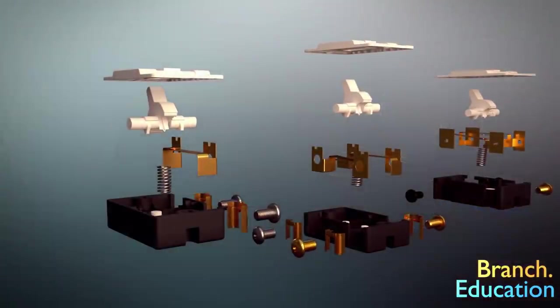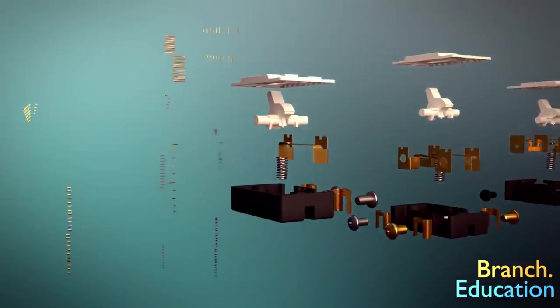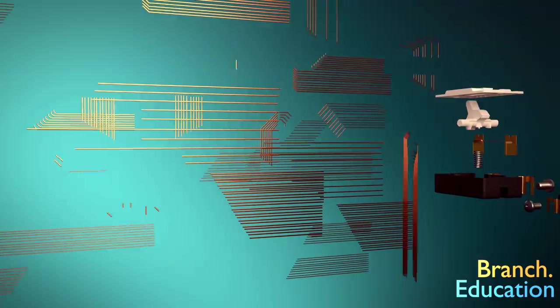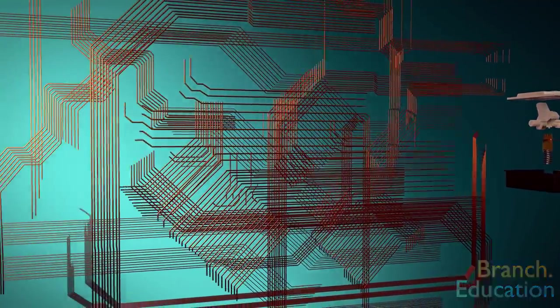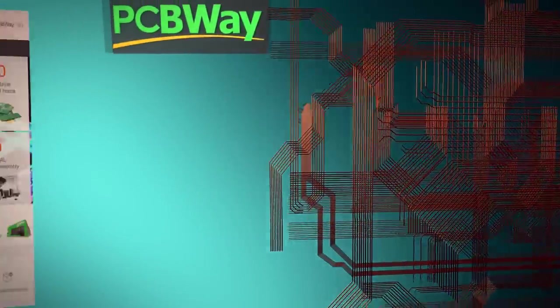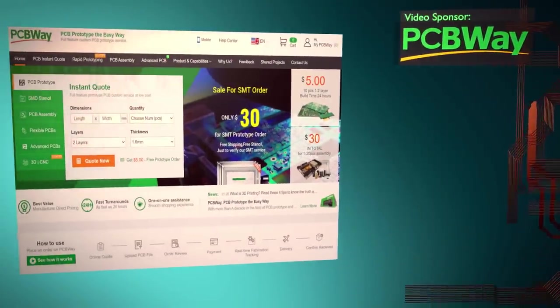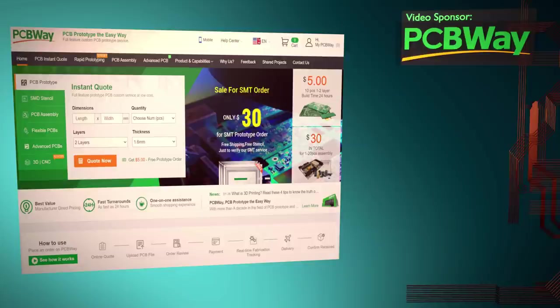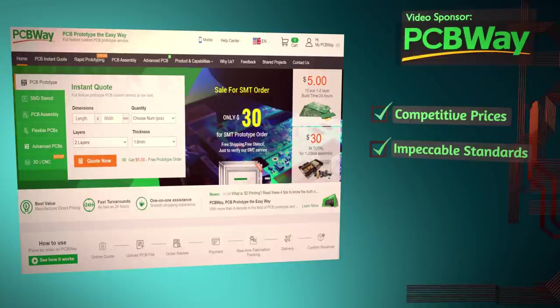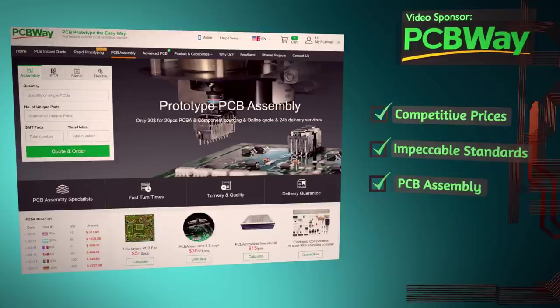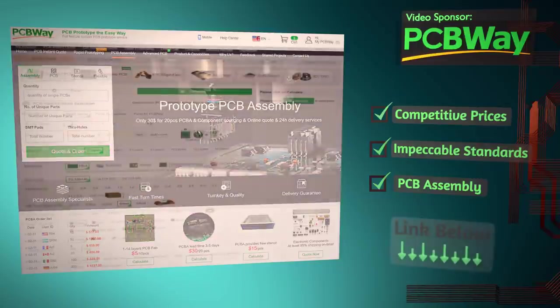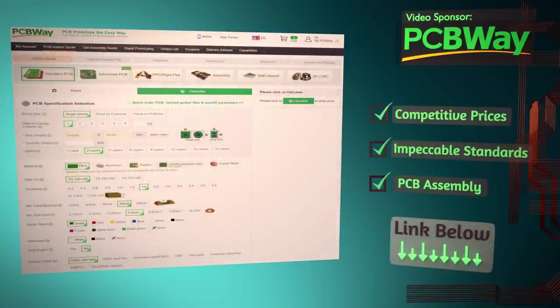Light switches are pretty humble but if you want to build complicated circuits you're going to have to use printed circuit boards or PCBs, which is rather fitting because this video was made possible by our sponsor PCBWay. PCBWay can quickly manufacture your PCBs with competitive prices and impeccable standards. They also provide PCB assembly services where they populate and solder the components to the PCB. Check them out using the link in the description below.